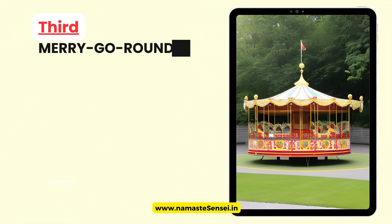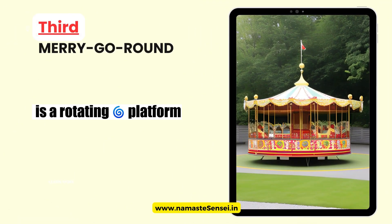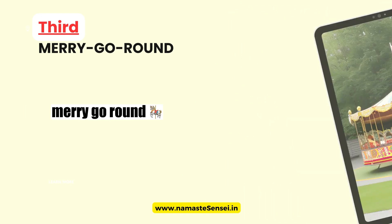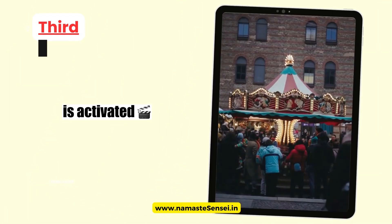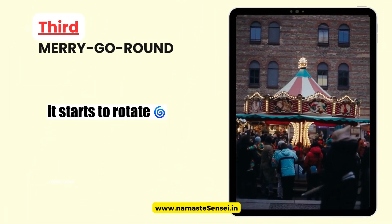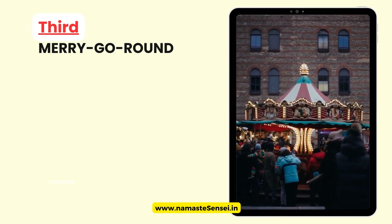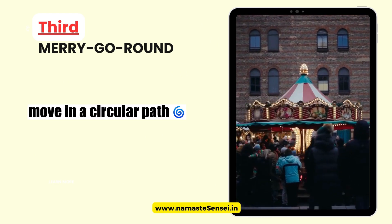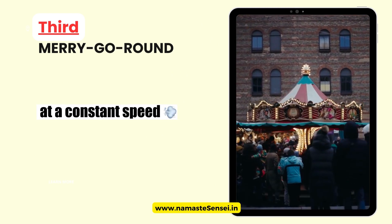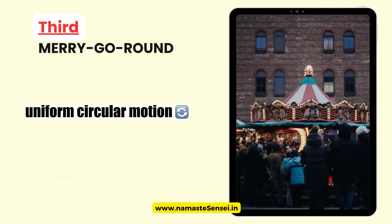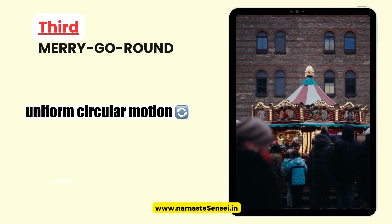Third, Merry-Go-Round. A Merry-Go-Round is a rotating platform with seats or figures for people to ride on. When the Merry-Go-Round is activated, it starts to rotate around a central axis. The riders on the Merry-Go-Round move in a circular path at a constant speed, experiencing uniform circular motion.